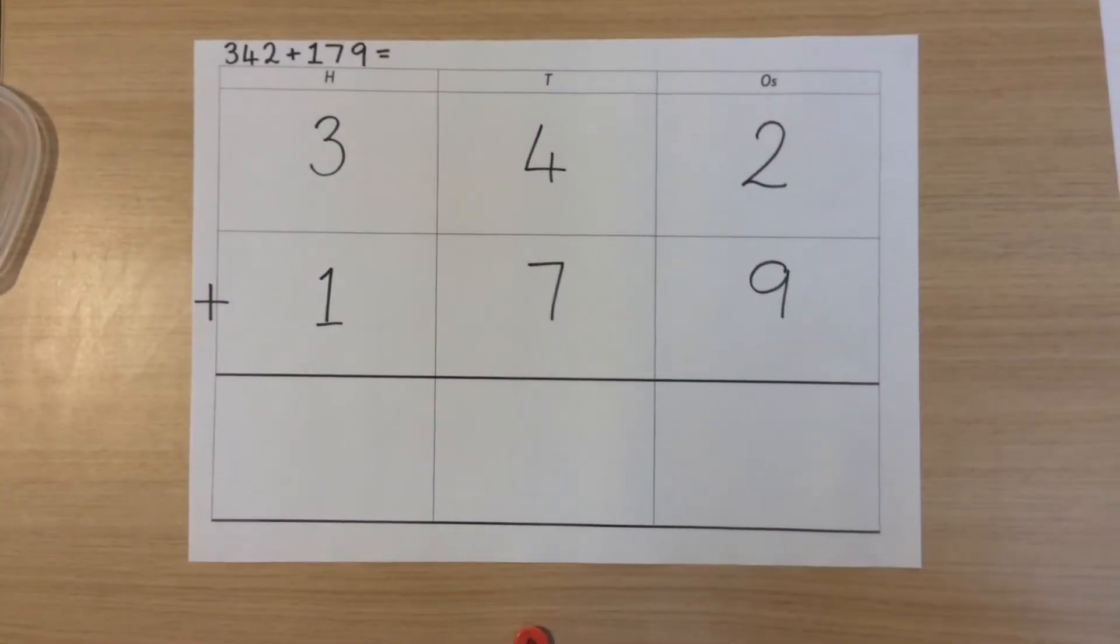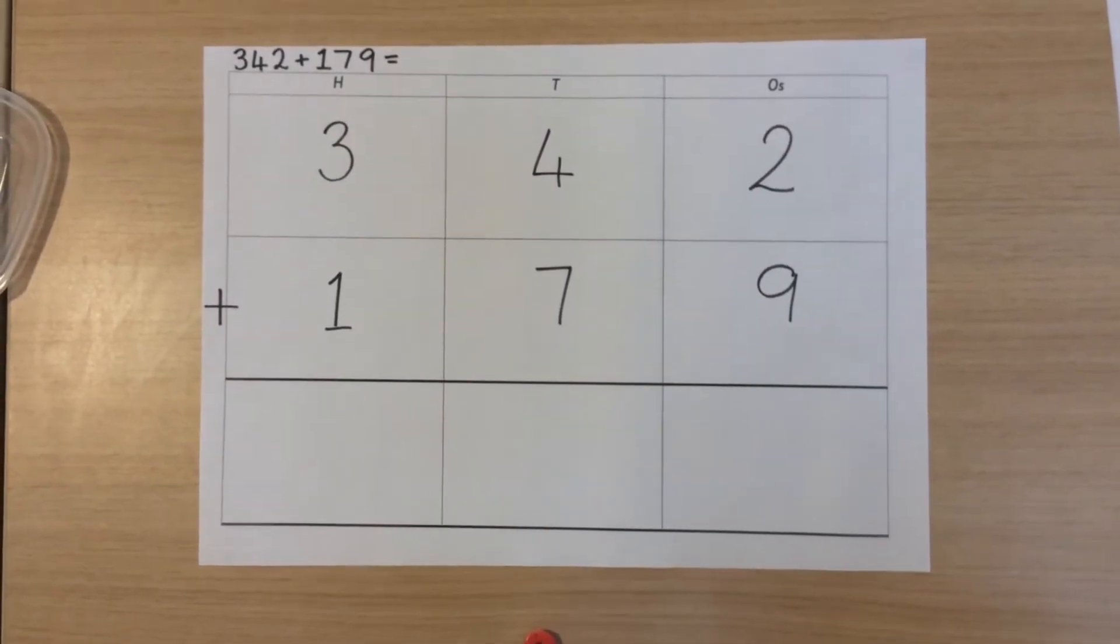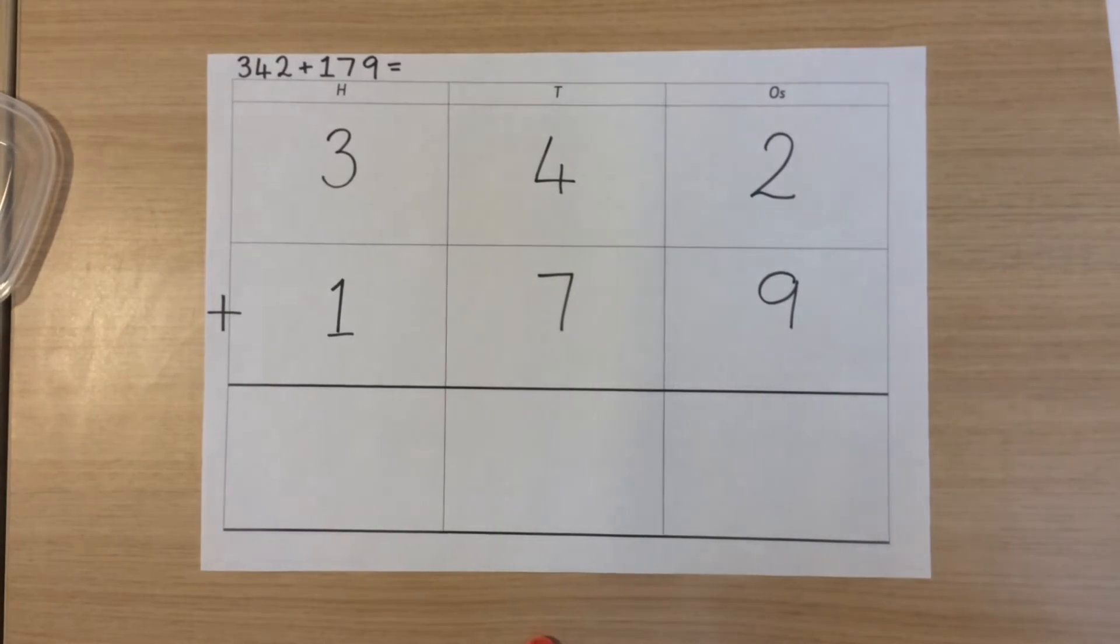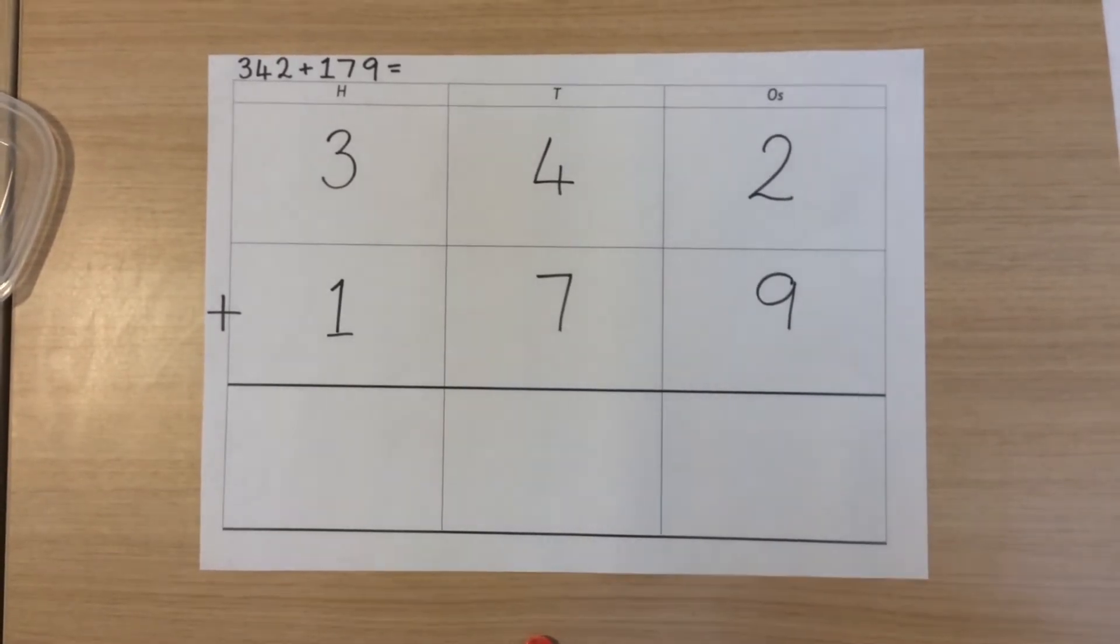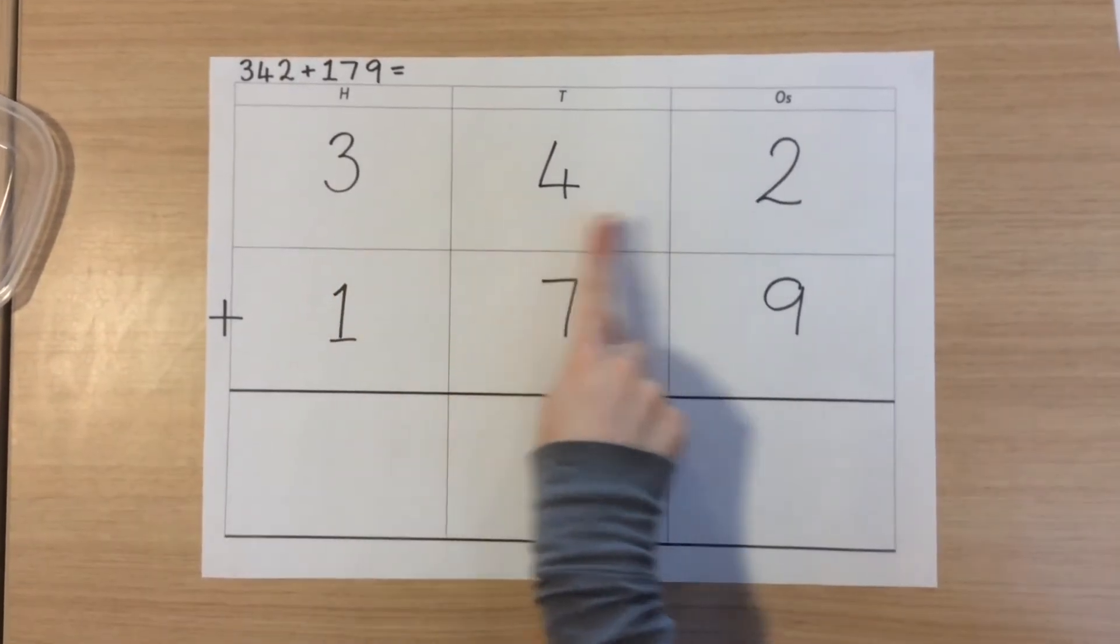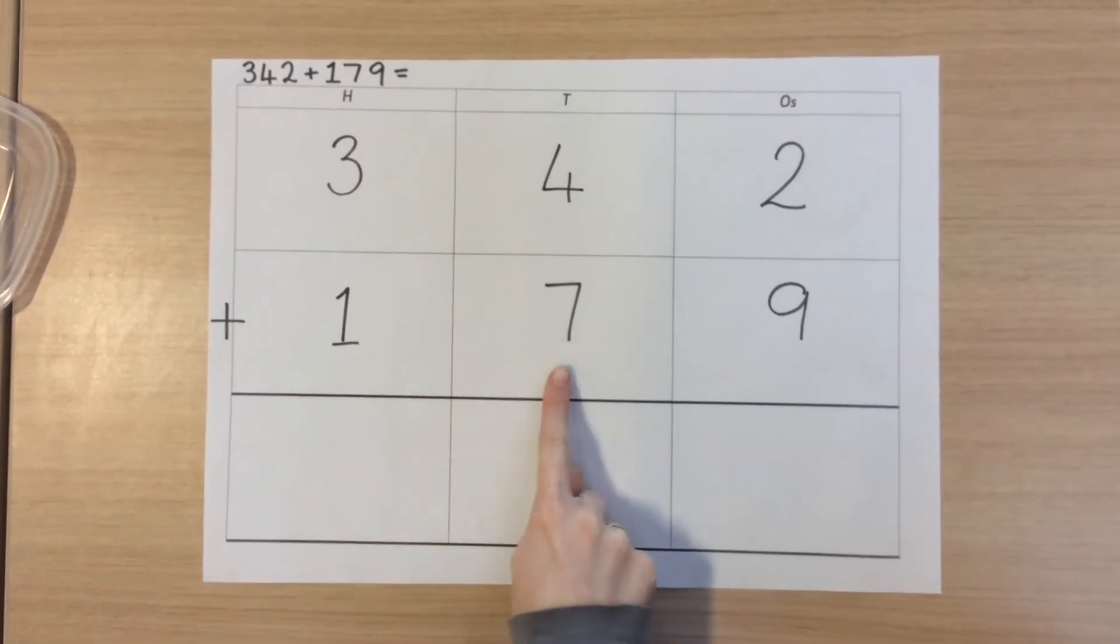The calculation we will be using is 342 plus 179. The first thing we need to do is write the numbers out in each place value column. In this case, 342 plus 179.